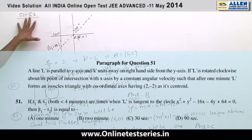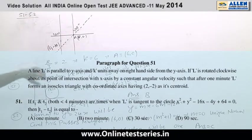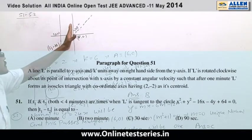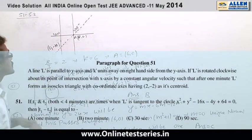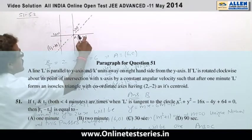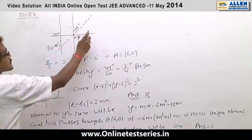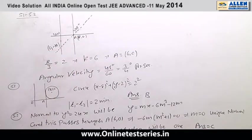Now the second paragraph for question number 51 and 52. There is a line which is given parallel to y-axis and k units away from the y-axis on the right side. Let this intersect the x-axis at the point k, 0.